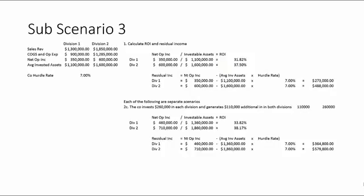For Division 2 we add the same additional net operating income to $600,000 and add the same assets, getting 38.17 percent. For residual income we input those calculated figures using the same hurdle rate of 7 percent. By investing assets into each division that generate $110,000 additional net operating income, both ROI and residual income go up.